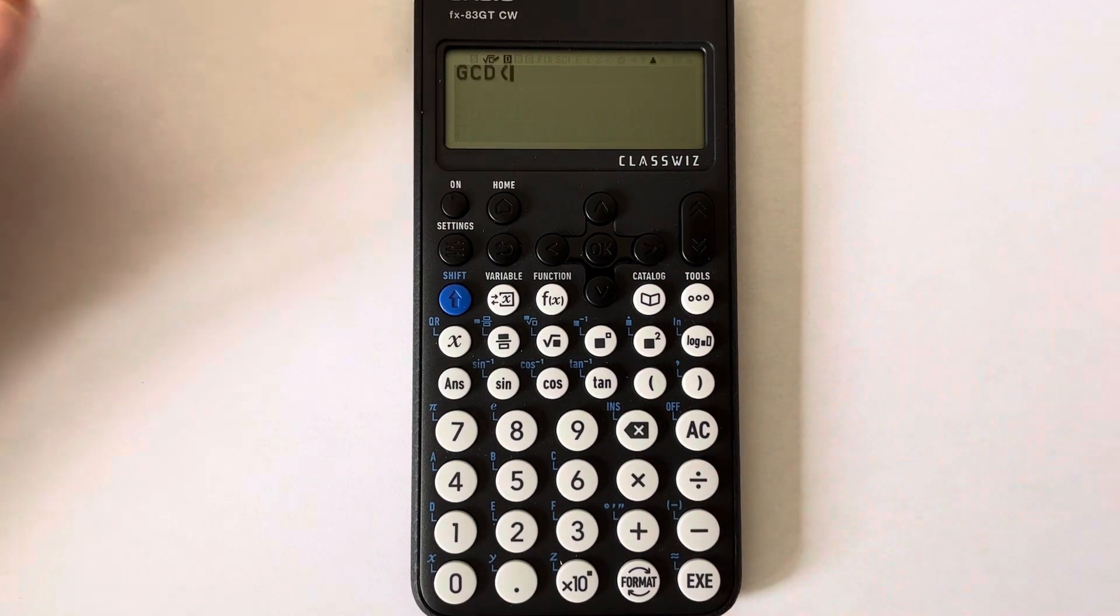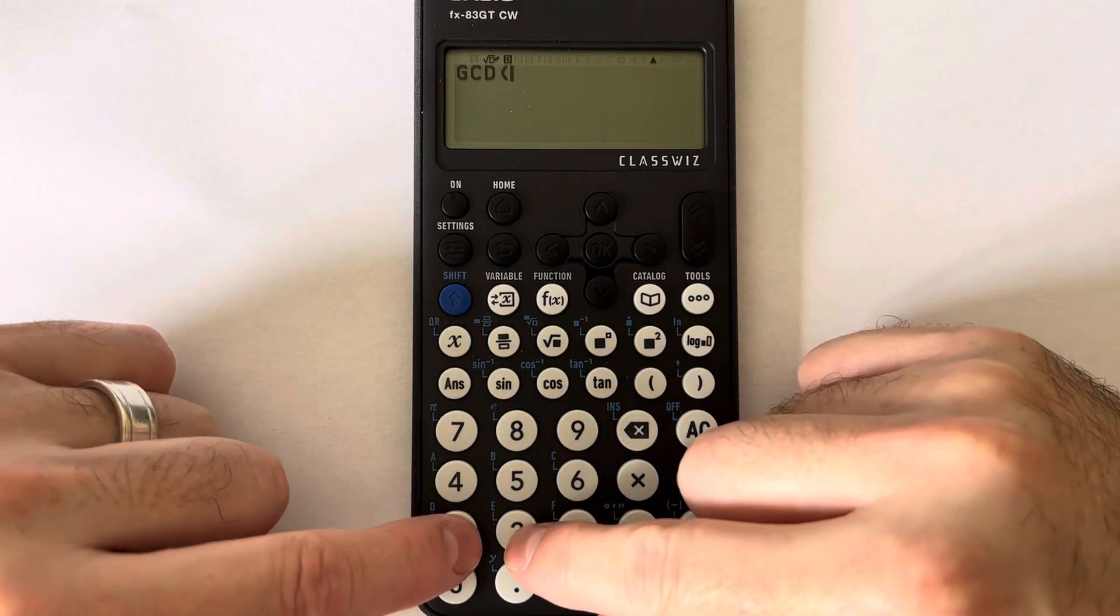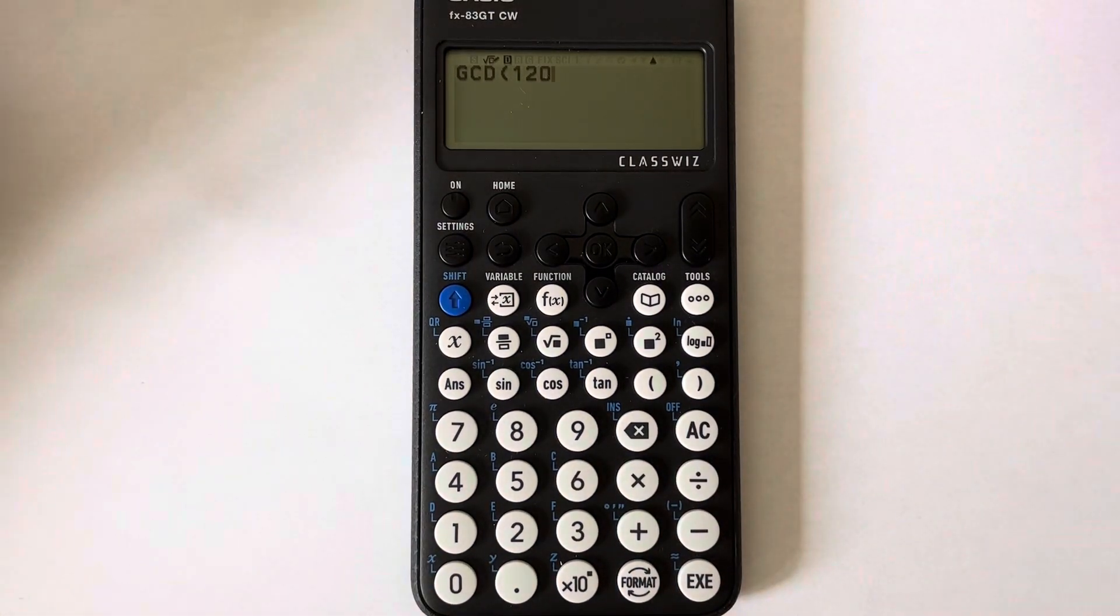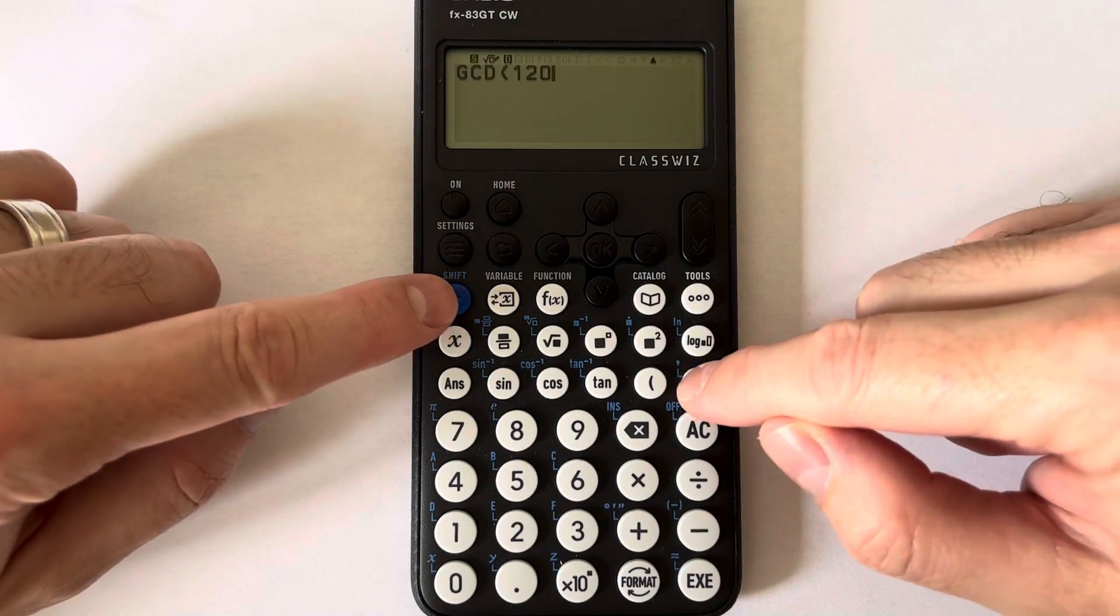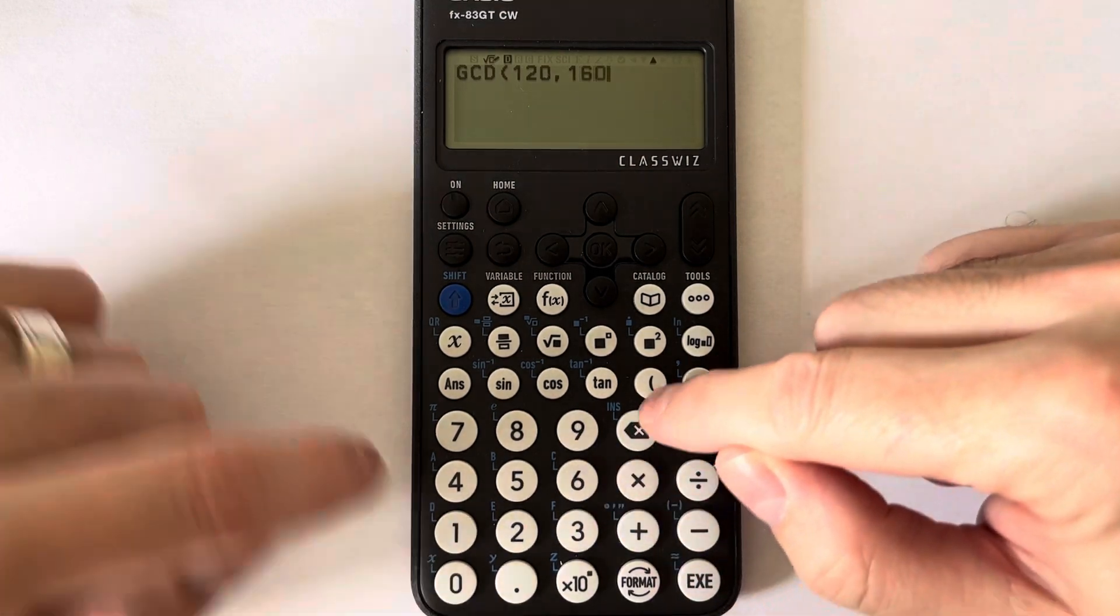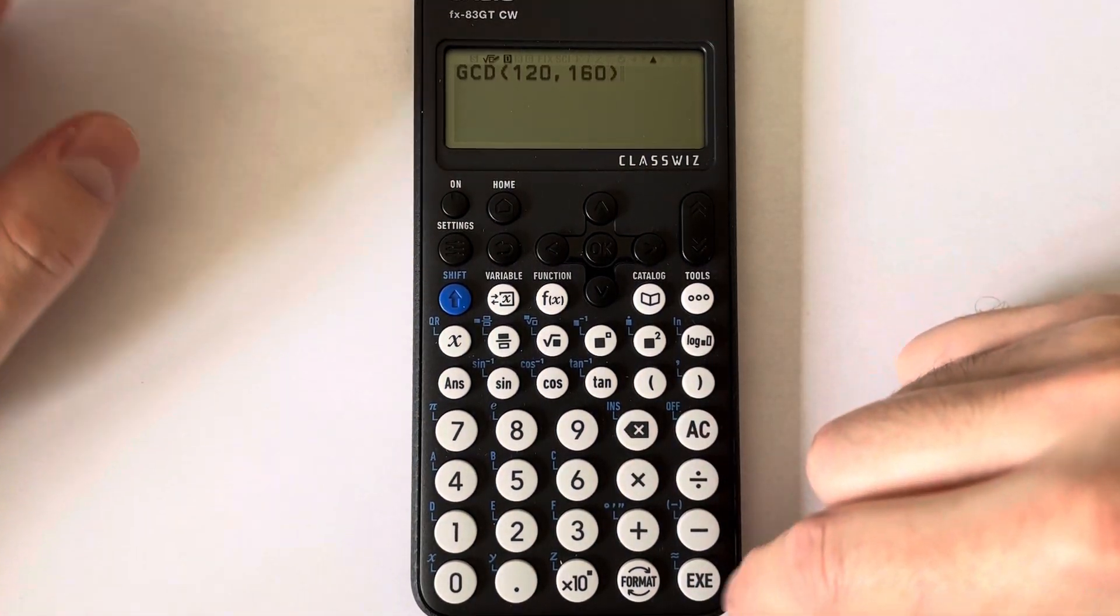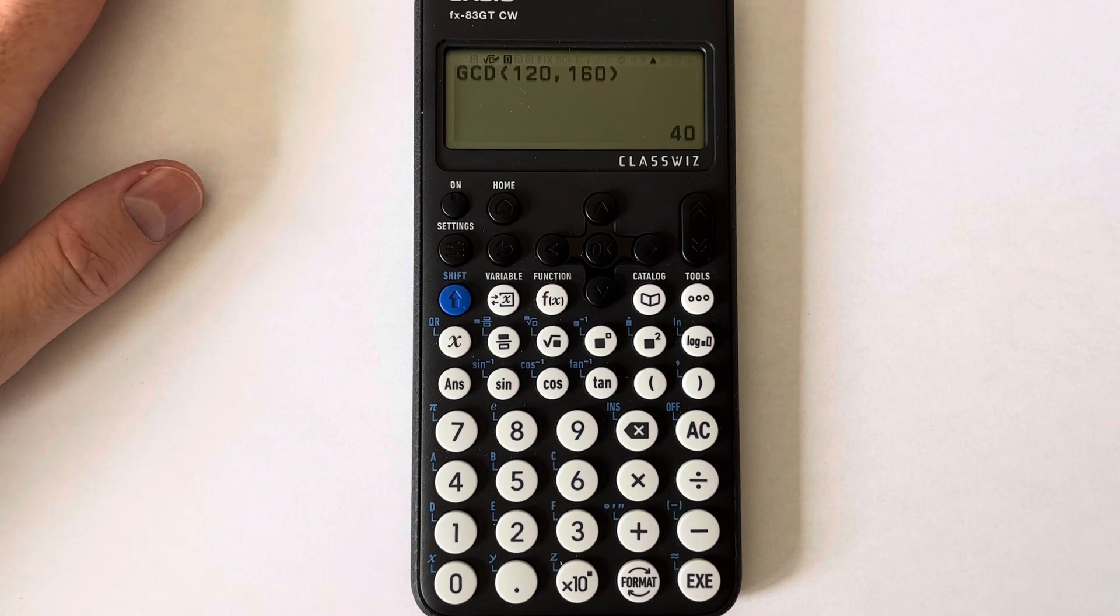Press execute and then our numbers were 120, and the second one was 160. We just need to put a comma in between our two numbers, close the brackets, and press the execute key, and we get an answer of 40.